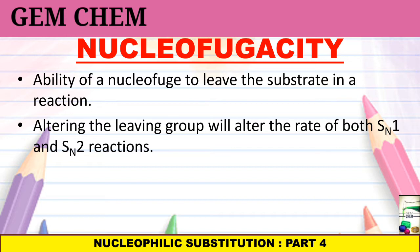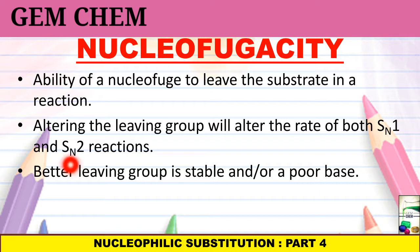Whenever a Nucleofuge is going out, it should be stabilized. The thing which is out of the molecule, when it is uniquely separate from the molecule, it should be stabilized. Then only we can say that the leaving group is better leaving group. And it can also be a poor base. If it is a poor base, then we can say that it is a better leaving group. So, better leaving group is stable and or a poor base.